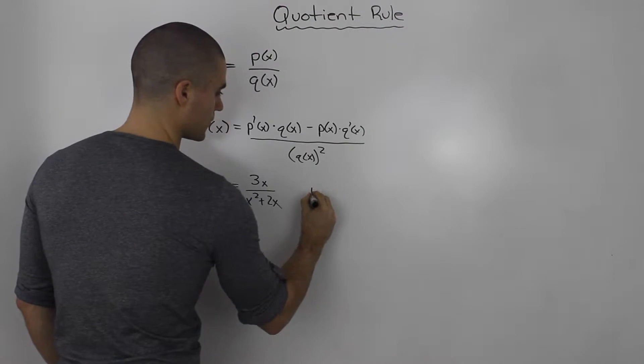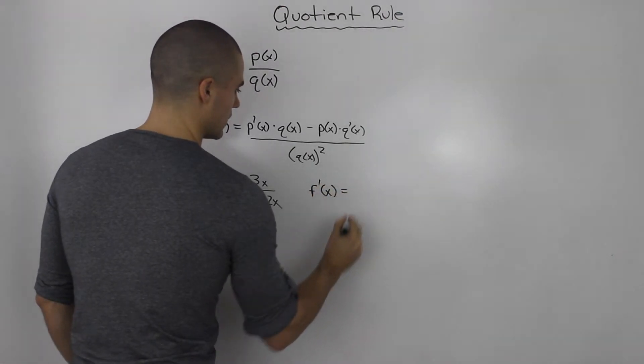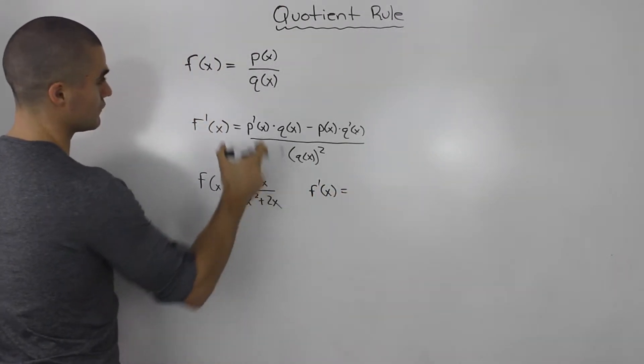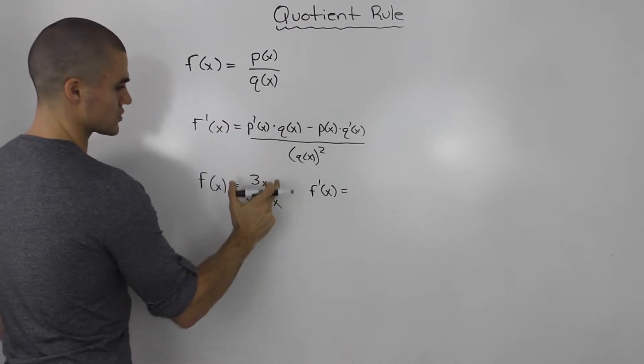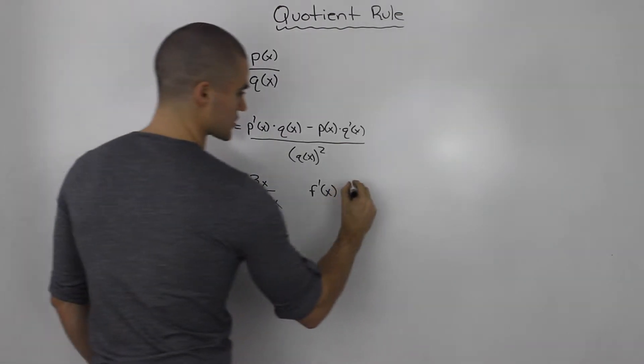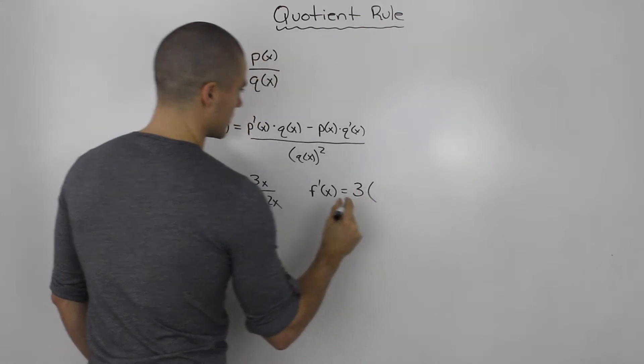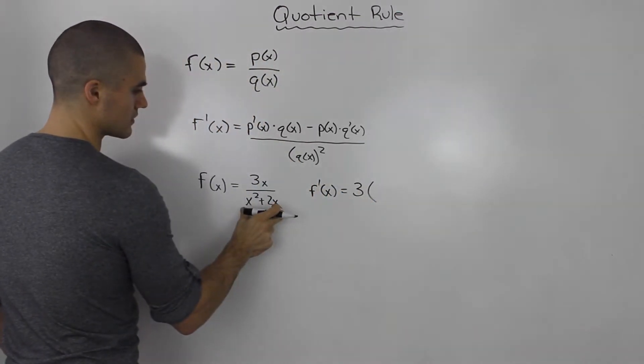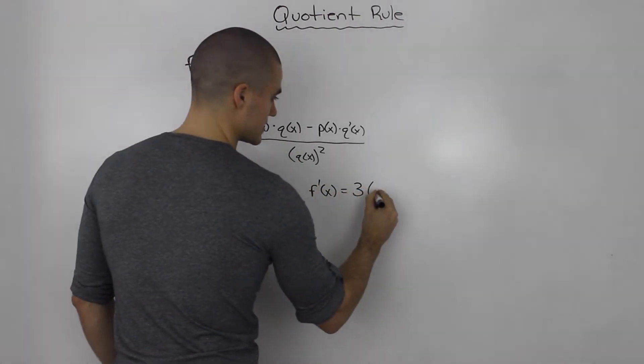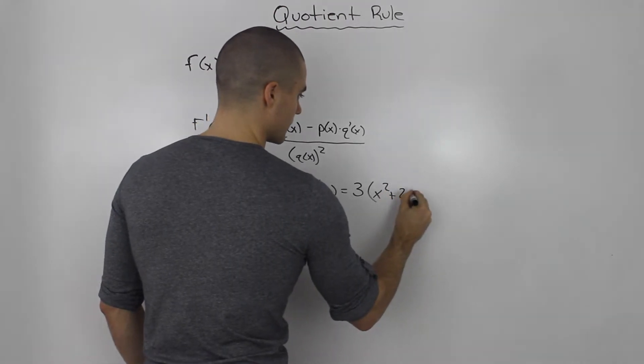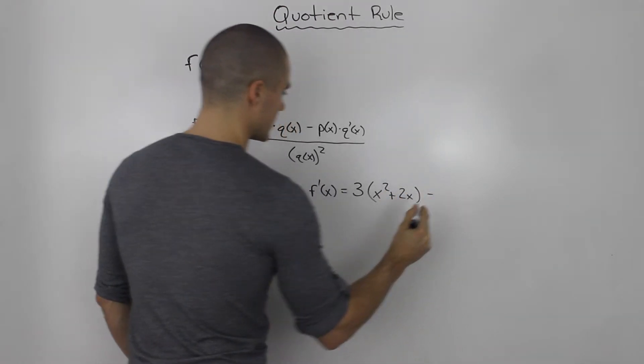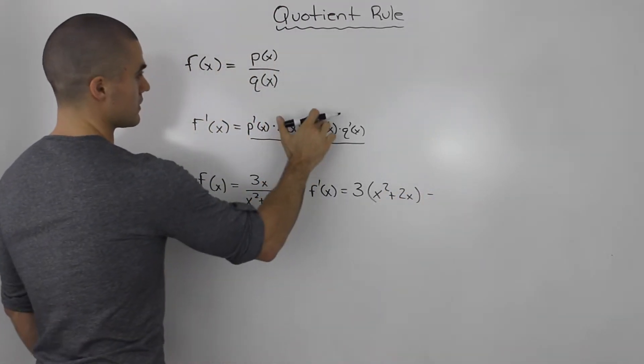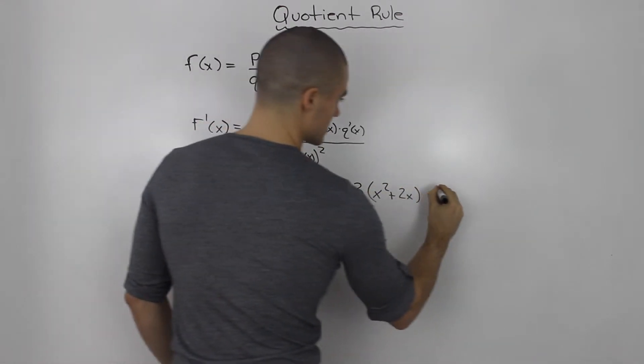The derivative of this function is going to be the derivative of the numerator - so the derivative of 3x, which is 3 - times the denominator left as is, minus the numerator left as is,